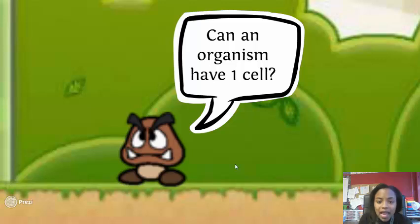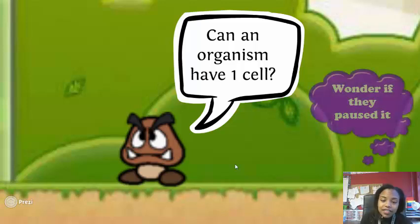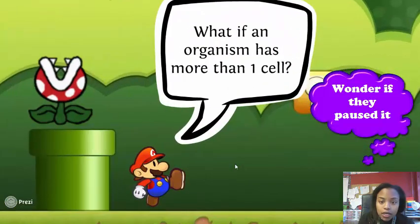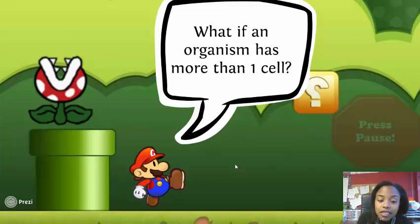Can an organism have just one cell? Of course it can. This is called unicellular. If an organism has more than one cell, it's called multicellular. Go ahead and fill that in in your notes now.